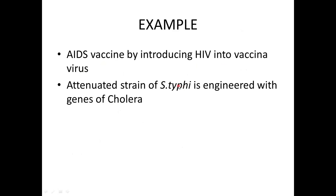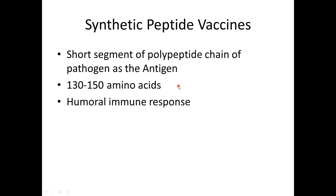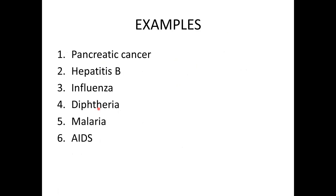Synthetic peptide vaccines use polypeptide chains as antigens, usually containing 130 to 150 amino acids only. They elicit a humoral immune response. Examples include vaccines for pancreatic cancer, hepatitis B, influenza, diphtheria, malaria, and AIDS.